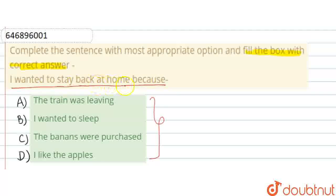So, let's see: 'I wanted to stay back at home because...' Option A: 'the train was leaving'. Because the train was leaving—no, this is not our option. Option B: 'I wanted to sleep'. Because I wanted to sleep—this is our option.